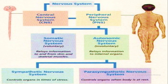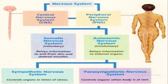The Central Nervous System is comprised of the brain and spinal cord. The brain and spinal cord make up the Central Nervous System. The Peripheral Nervous System is called the Peripheral Nervous System.